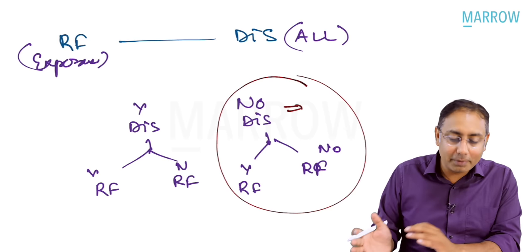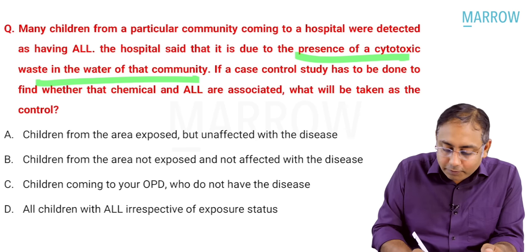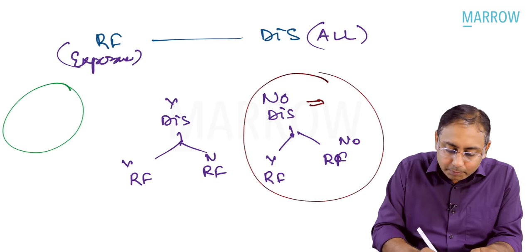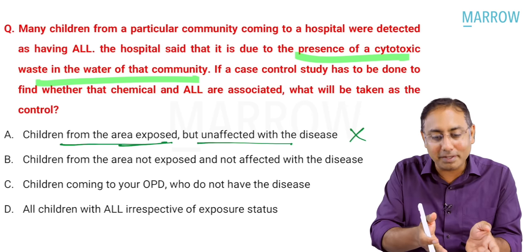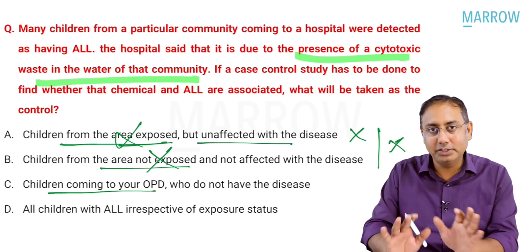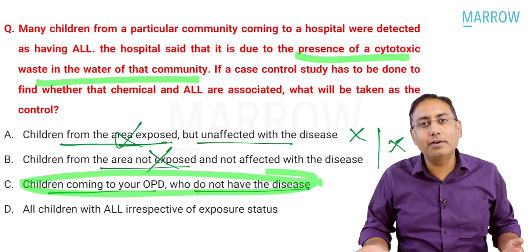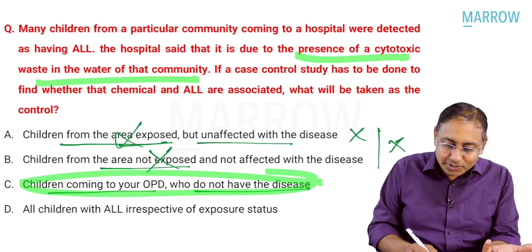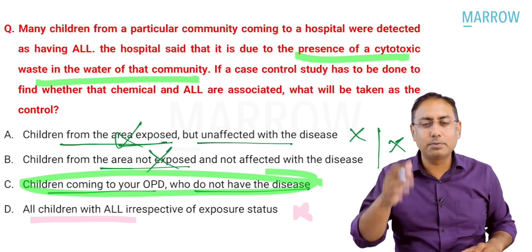Analyzing options: 'Children from the exposed area but unaffected' — no, you don't restrict controls to only the exposed area. 'Children from an unexposed area' — also not appropriate as sole controls. 'Children coming to OPD who do not have disease' — yes, this is the correct answer for a hospital-based case-control study. 'All children with ALL' — this is the case group, not control. Controls = children in OPD without ALL.